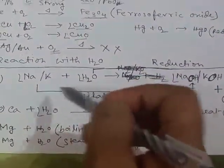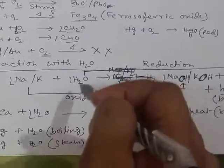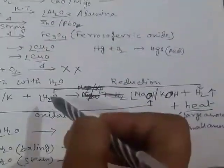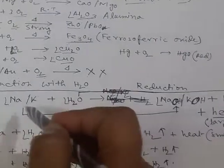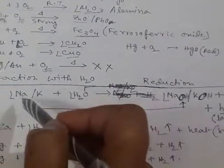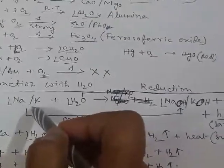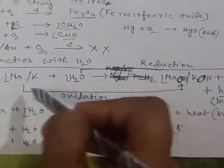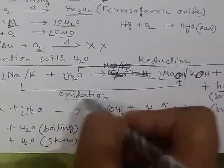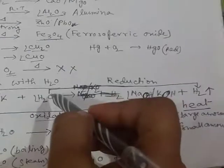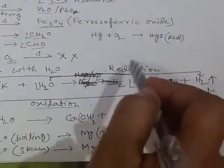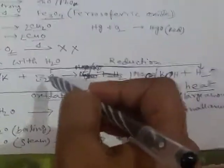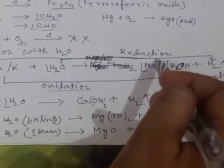Next, reaction with water: when metals react with water, there will be formation of the corresponding hydroxide or oxide, and hydrogen gas is liberated from the water. The metal gets oxidized — forming metal oxide or hydroxide — and from water, as oxygen is removed, we get only hydrogen, which is reduction. Removal of oxygen is reduction, so from water we get hydrogen through the reduction process.